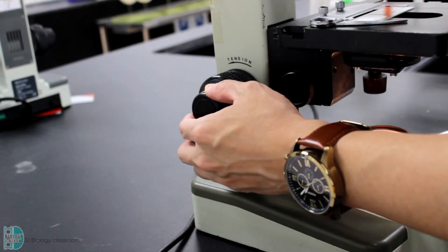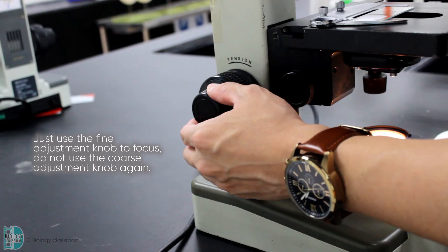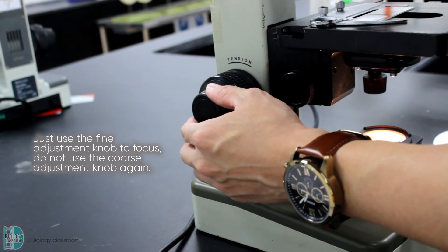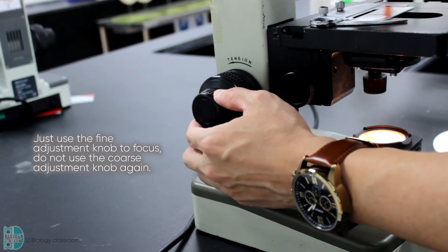Now, use the fine adjustment knob to focus and create a sharp image again. You don't have to use the coarse adjustment knob as you only need to have very fine movement of the stage.